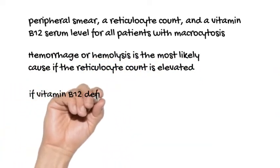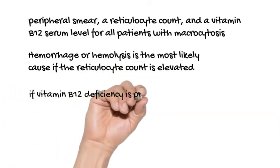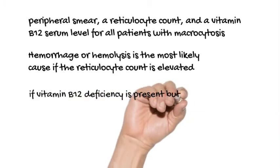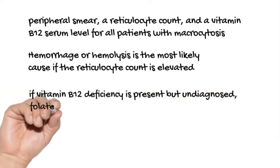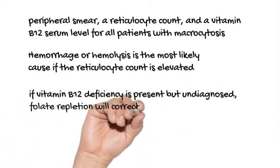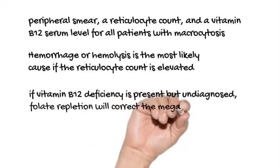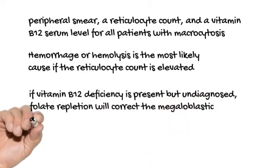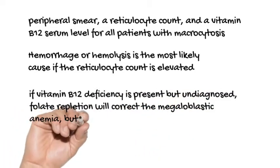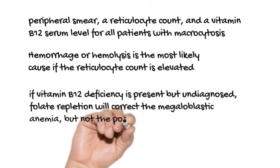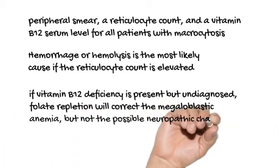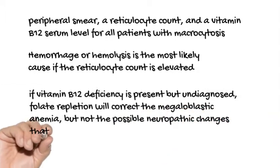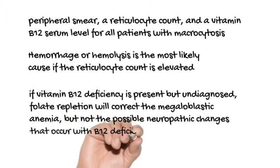Measures of vitamin B12 are a useful part of the initial workup, because if vitamin B12 deficiency is present but undiagnosed, folate repletion will correct the megaloblastic anemia, but not the possible neuropathic changes that occur with B12 deficiency.